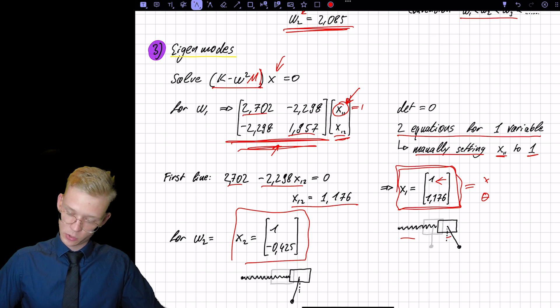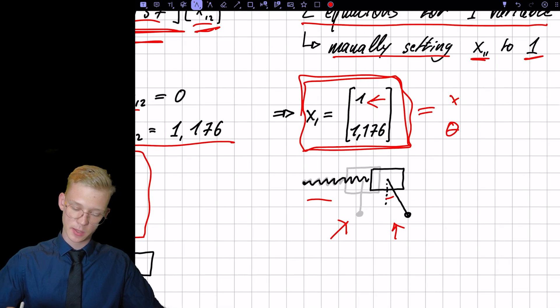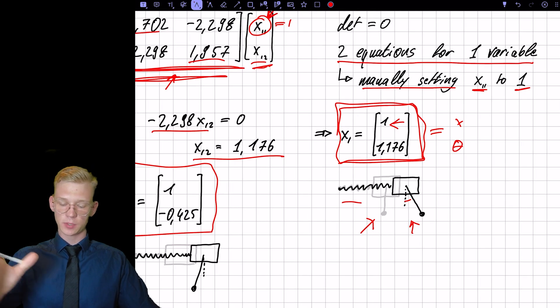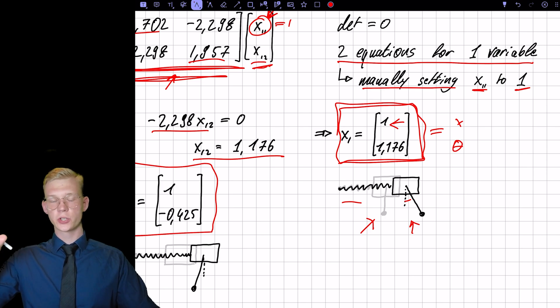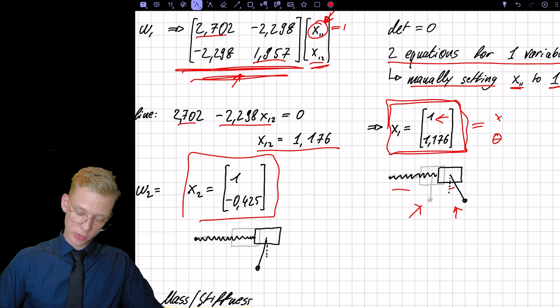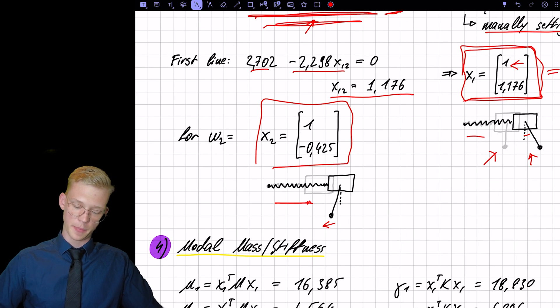So this first eigenmode will look something like this. In gray, we have the system that is completely at rest. And the black system is the position at which it will oscillate at. So this will be multiplied with a same time function. So it will get larger and smaller. Both degrees of freedom will get larger and smaller at the same time and will also reach zero at the same time. For the second part, we also have an extended spring, but the pendulum is pointing backwards.